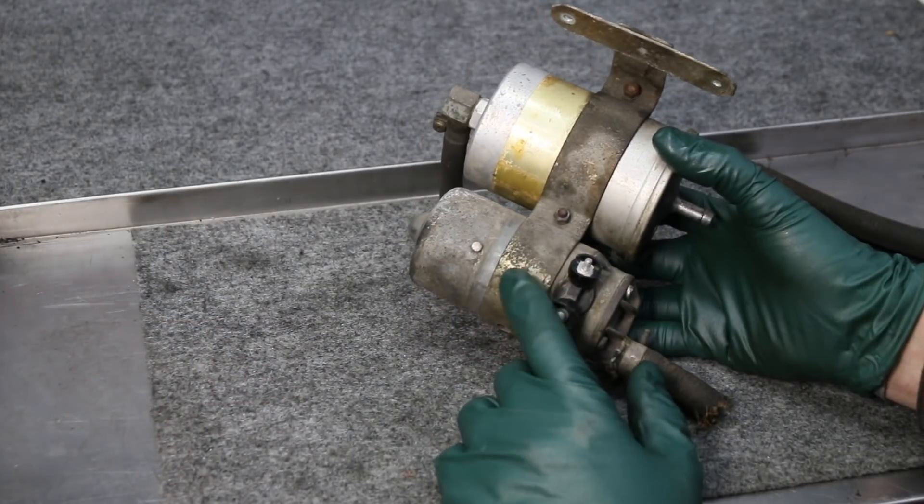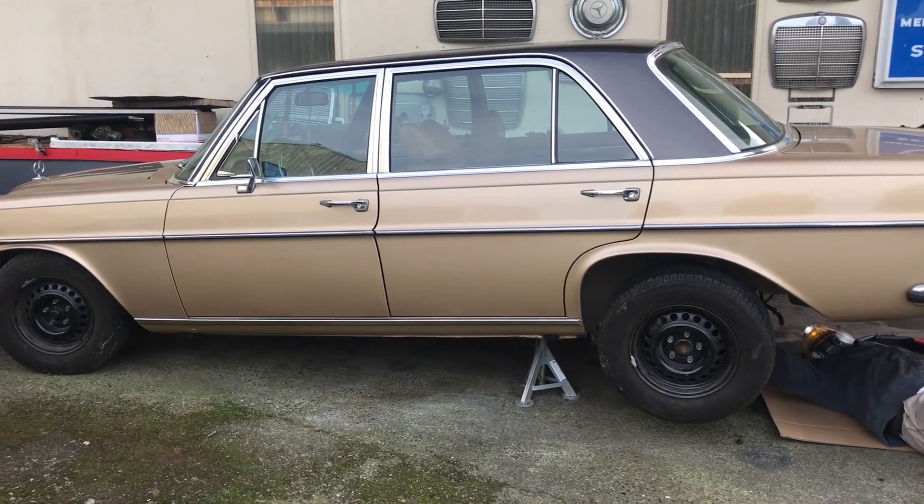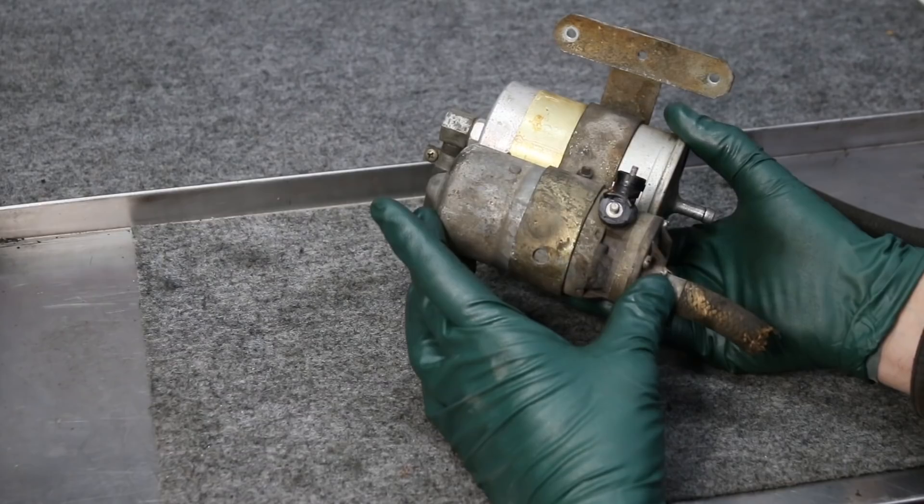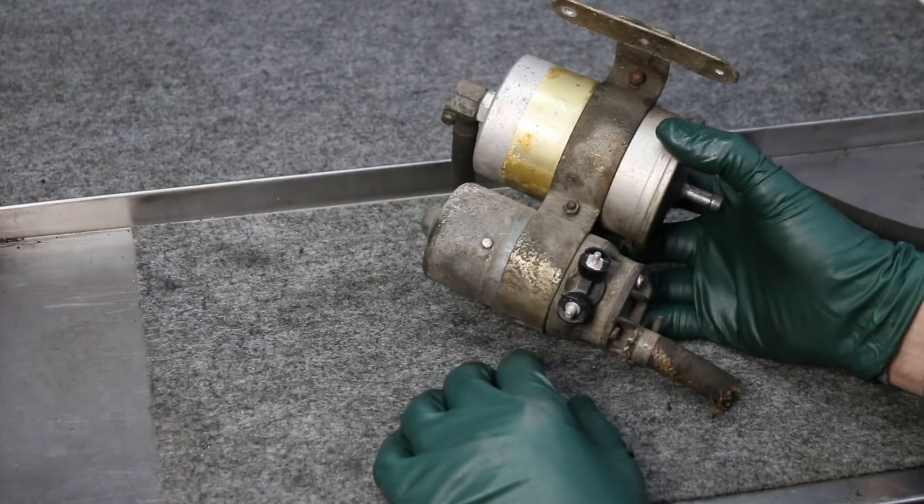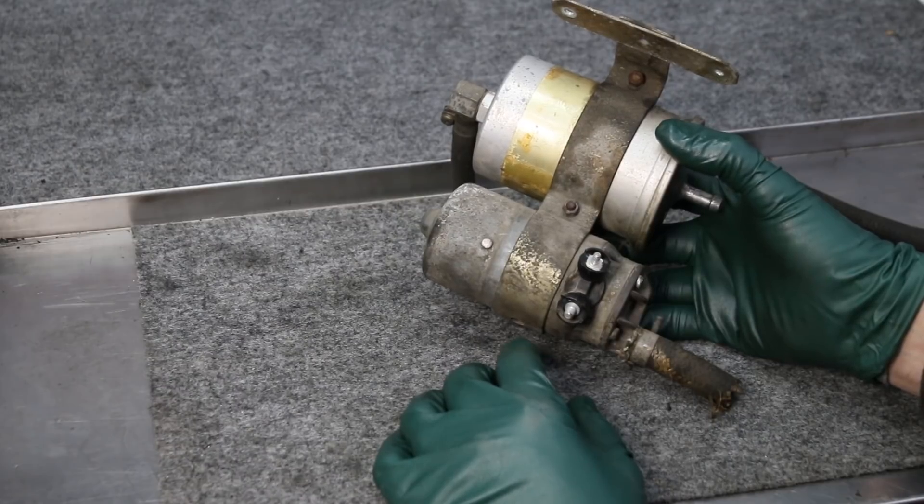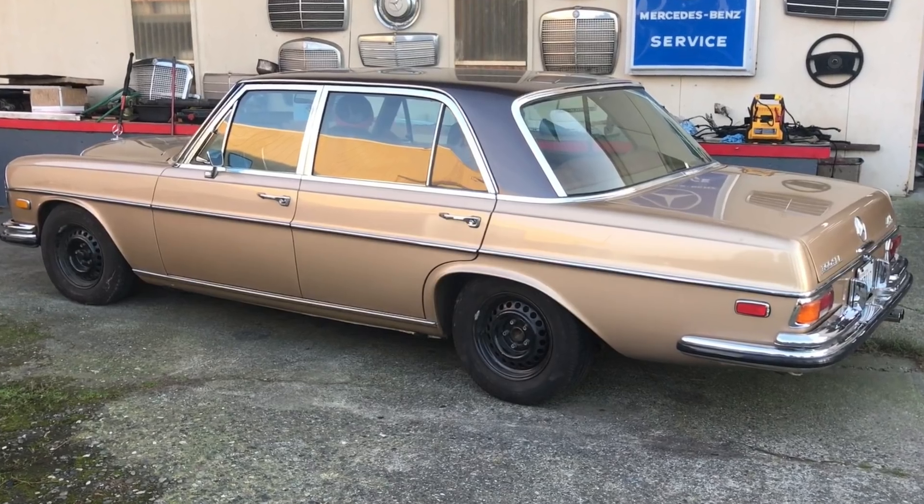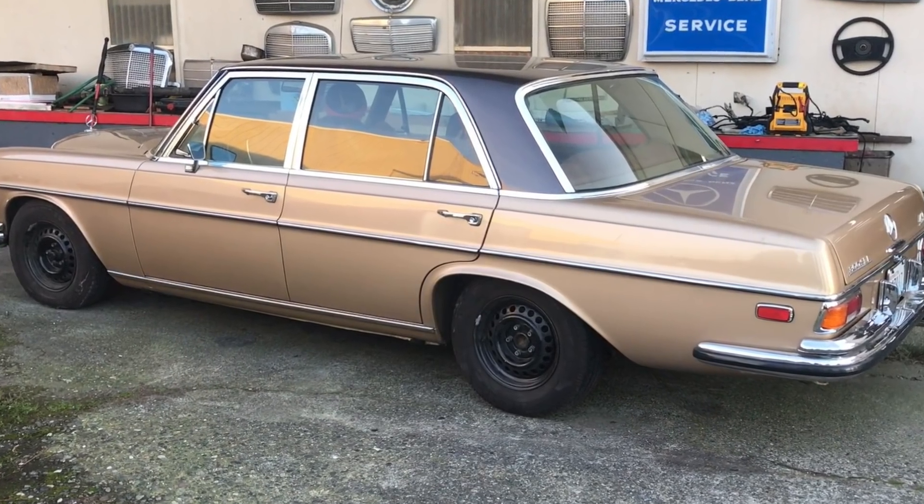You're looking at an electric fuel pump off an early 1970s Mercedes-Benz. This particular Bosch fuel pump was used on those early electronic D-jetronic fuel injection systems like you see on my 300 SCL 4.5.